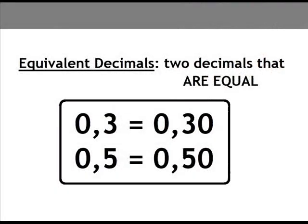Equivalent decimals. Two decimals that are equal. For example, 0.3 equals 0.30, and 0.5 equals 0.50.